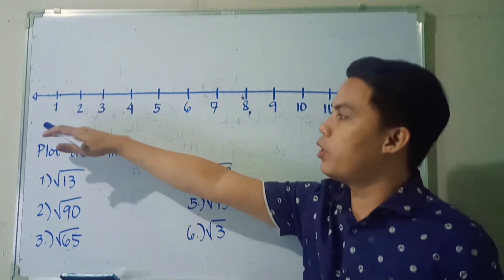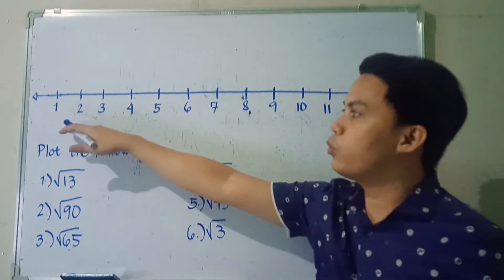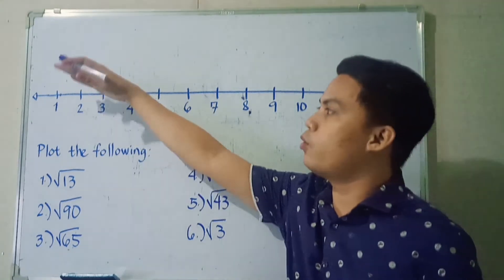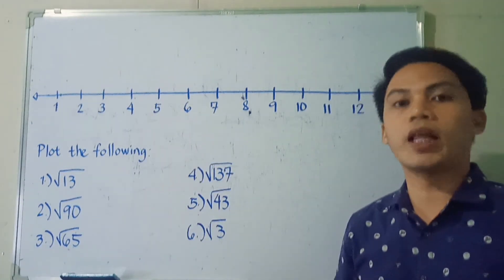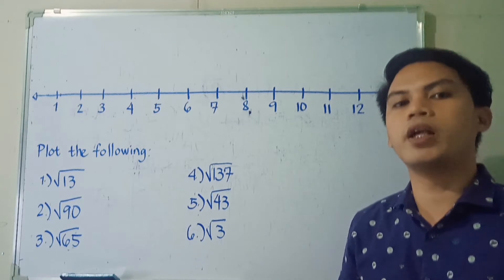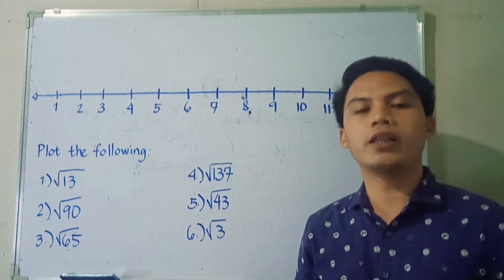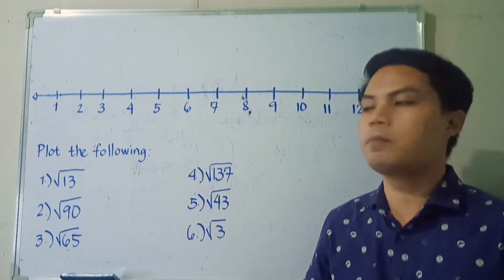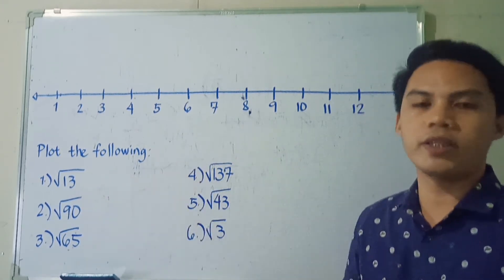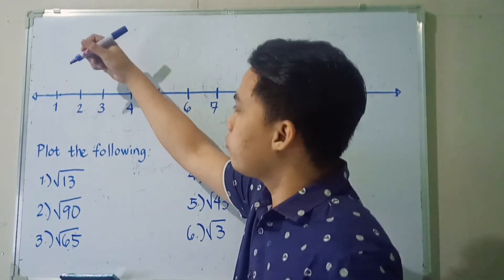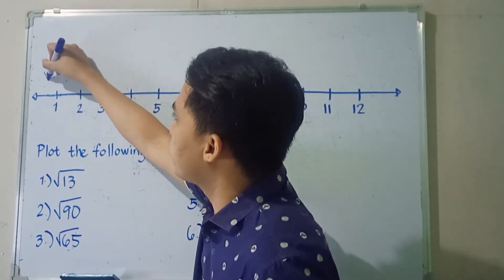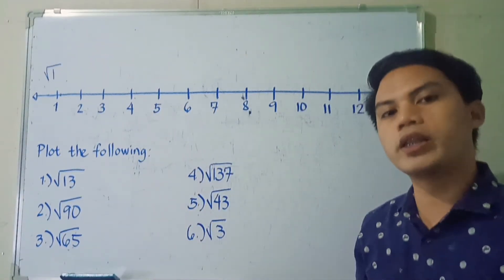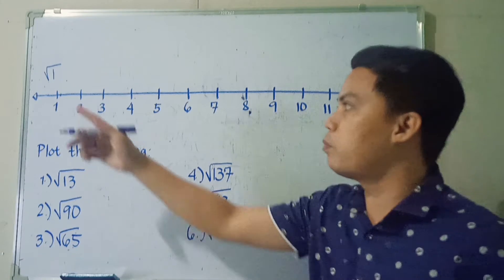If you notice at the bottom, we have here our units 1, 2, 3, 4, up to 12. So we'll place the corresponding perfect squares above them. Although it's not part of the number line, it will be our guide to make plotting the points easier. For 1, we all know that 1 is the answer for the square root of 1. So our first perfect square would be 1.